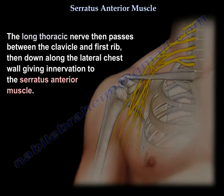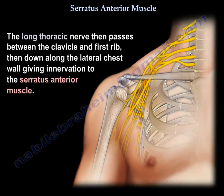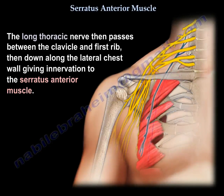The long thoracic nerve then passes between the clavicle and the first rib, then down along the lateral chest wall, giving innervation to the serratus anterior muscle.